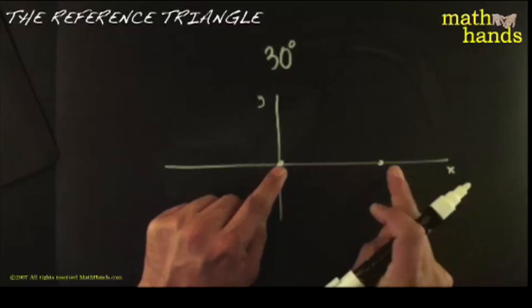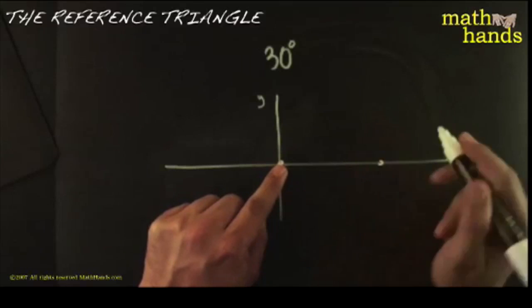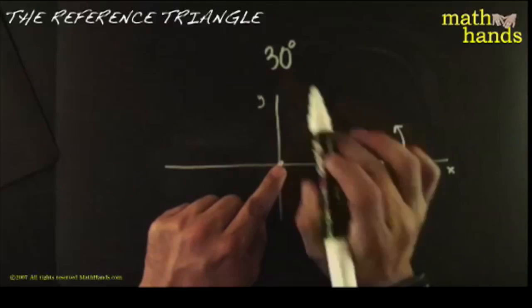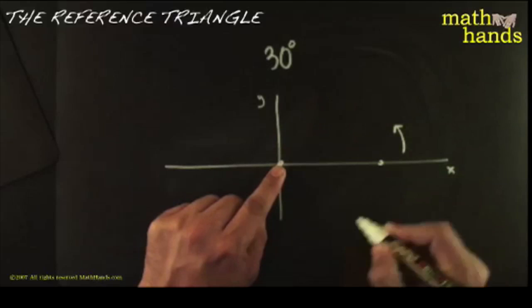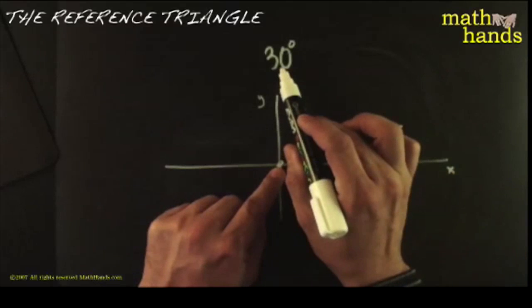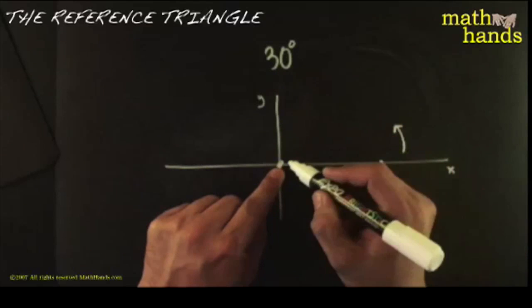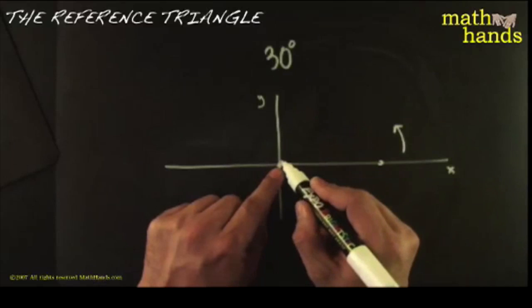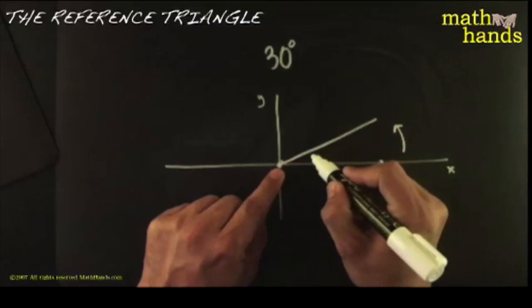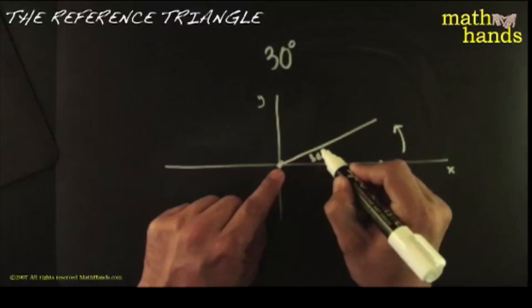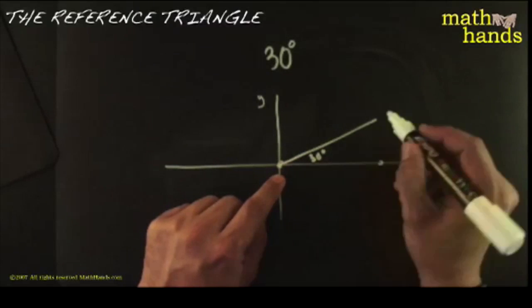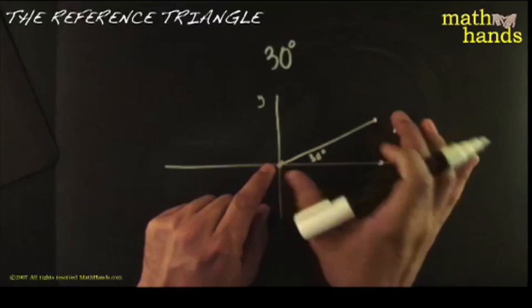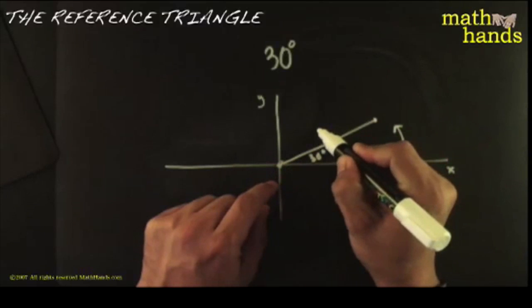The positive side of the x-axis is here; this would be the negative side. Reference angles always begin to be measured from the positive x-axis, and they always start off with a segment of any length you want — for example, I can make it length two. You spin it counterclockwise for positive angles and clockwise for negative angles. So this one would be thirty degrees — halfway between zero and ninety would be forty-five, so thirty degrees would be right around there.